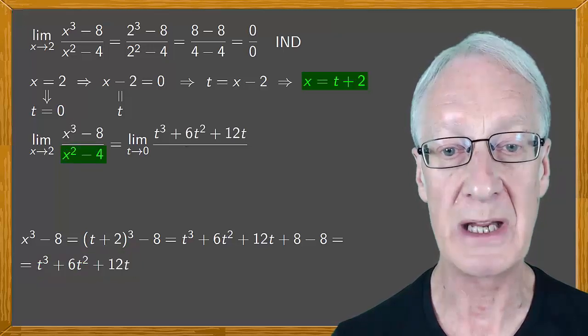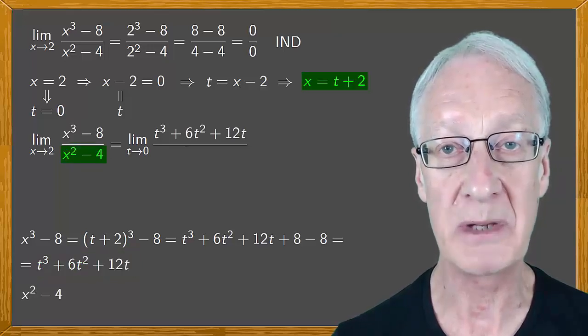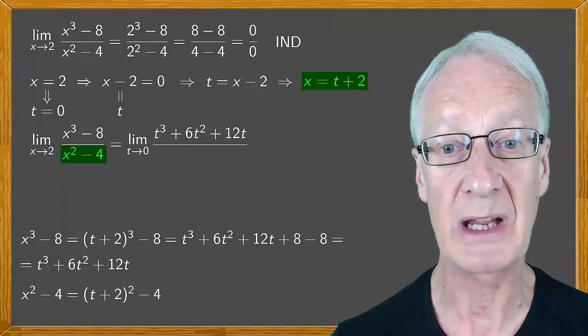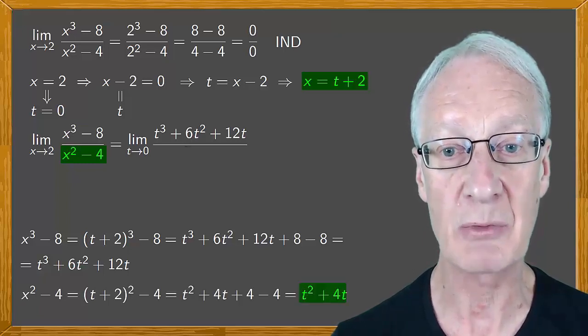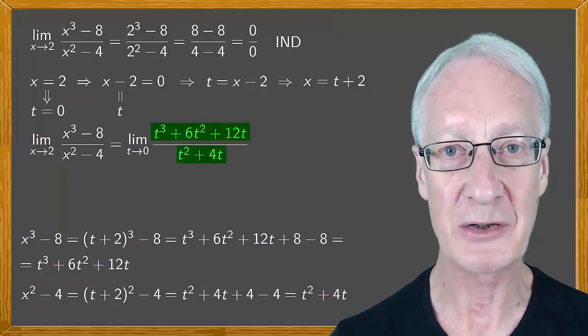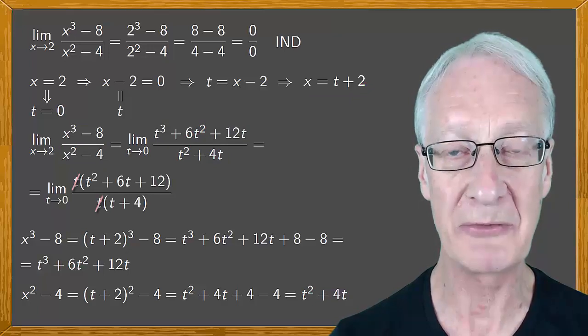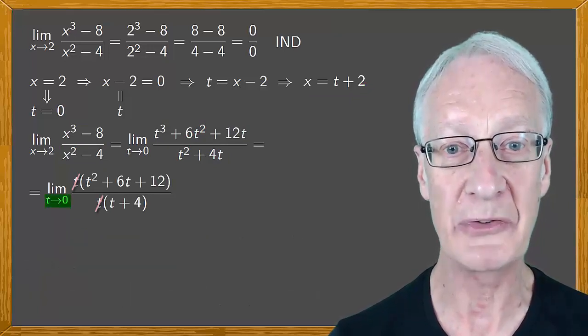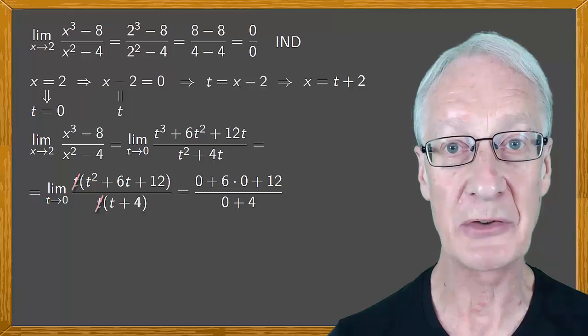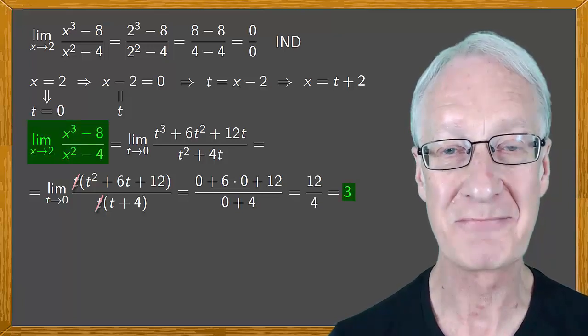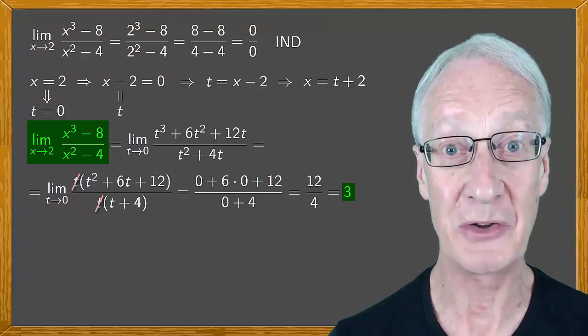In the denominator, x squared minus 4 becomes t plus 2 squared minus 4, which when expanded is t squared plus 4t. Notice there's a common factor of t, so we can simplify. For continuity, we replace t with 0, and this leaves us with 12 over 4, which is 3. And that's the result for the limit.